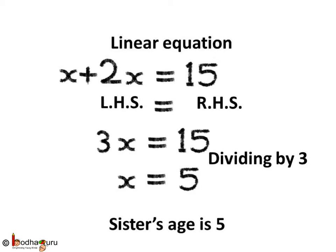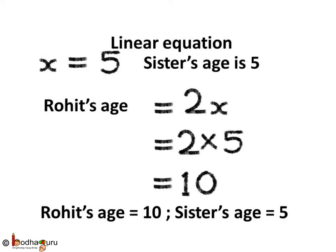Now what about Rohit's age? We assumed Rohit's age is double the age of his sister, that is it is equal to 2x. So let's put the value of x, which we got as 5. 2x means 2 multiplied by 5, which is equal to 10. So Rohit's age is equal to 10 and sister's age is equal to 5.